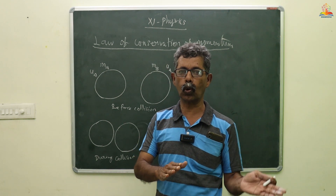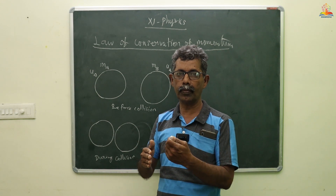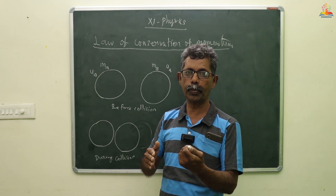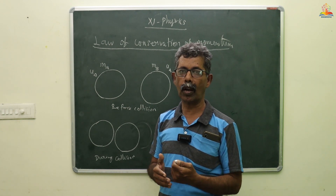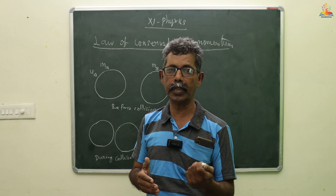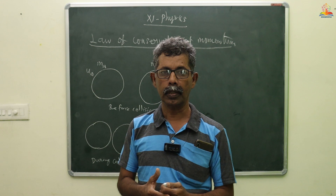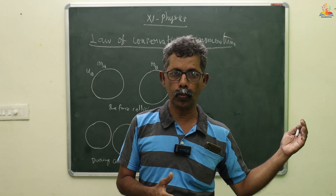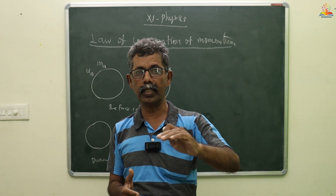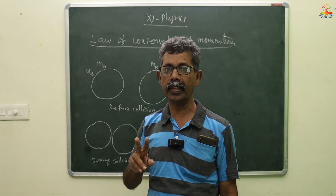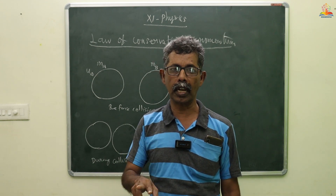Collision means one object collides with another object. For example, when a bus is travelling at 60 or 70 km/h and another bus is moving in the same lane at 90 or 100 km/h, they move straight and collide with one another — that is a collision. There are two types: elastic collision and inelastic collision.